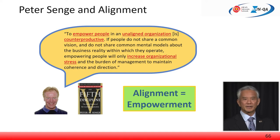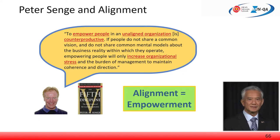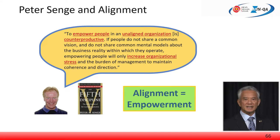Take an example from parenting. If both parents are totally aligned, their children get a clear picture of what they need to achieve. But if one parent wants this and the other parent wants that, the child becomes confused and does not know what goal to achieve. Peter Senge said this in his book, The Fifth Discipline, in 1990, 30 years ago.